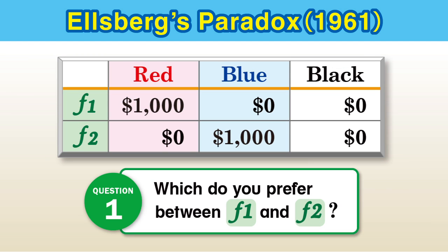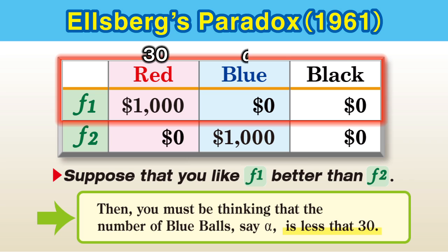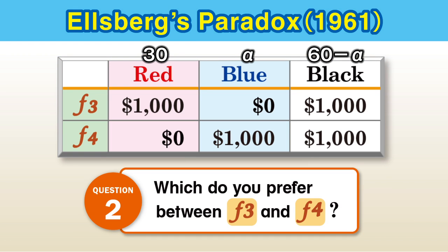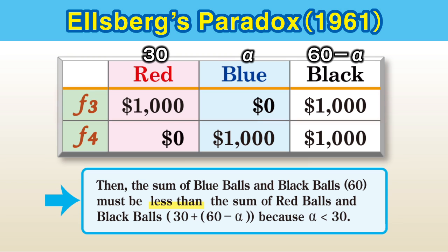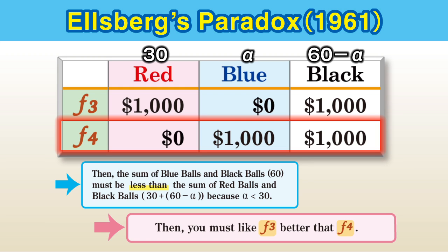Let's consider the first choice between F1 and F2. Suppose you choose F1 over F2 — that means you think the number of blue balls is less than 30. Call this number alpha, so alpha is less than 30. Moving to the second choice between F3 and F4: the sum of red balls and black balls is 30 plus (60 minus alpha), which equals 90 minus alpha. Since alpha is less than 30, the sum of red and black balls in F3 is more than 60, while for F4 the sum of blue and black balls is just 60. Therefore, you must choose F3 over F4, because you chose F1 over F2.